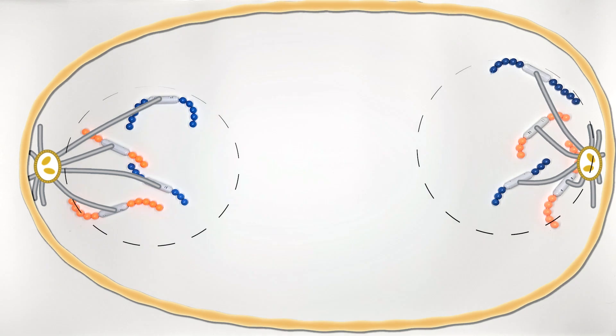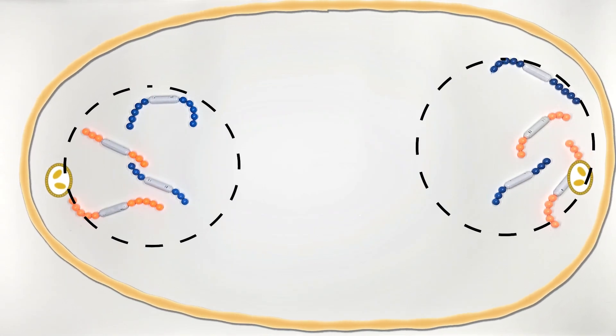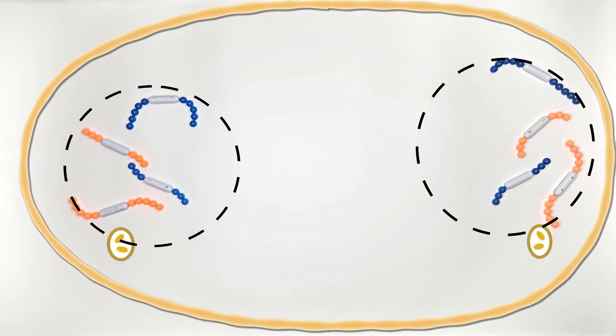The nuclear envelope begins to form, the spindle apparatus breaks down, and the chromosomes decondense back into chromatin.